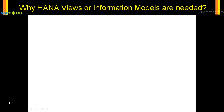Before we move forward, we need to understand why information modeling is needed in the first place. We all know that data is stored in multiple database tables in SAP or in any ERP system. We need to fire complex queries like joins, selections, and sub-queries to pull data from the database and show it in the front end. With the advent of HANA, SAP encourages that we do all our calculations at the database level and bring back the final output in the application layer.